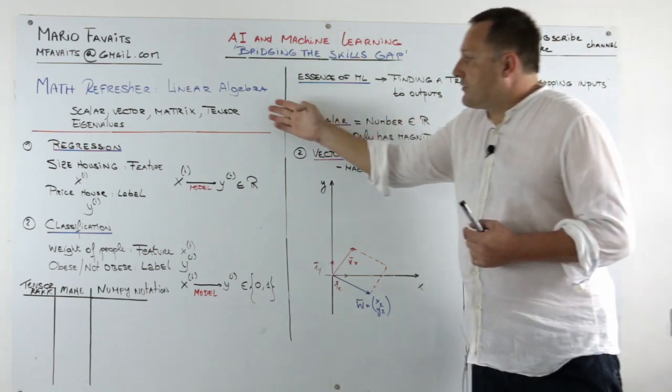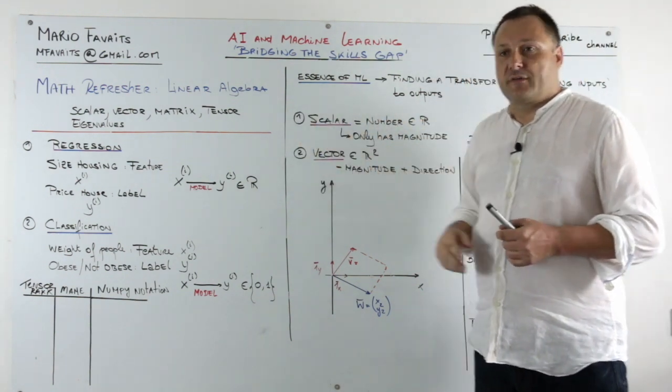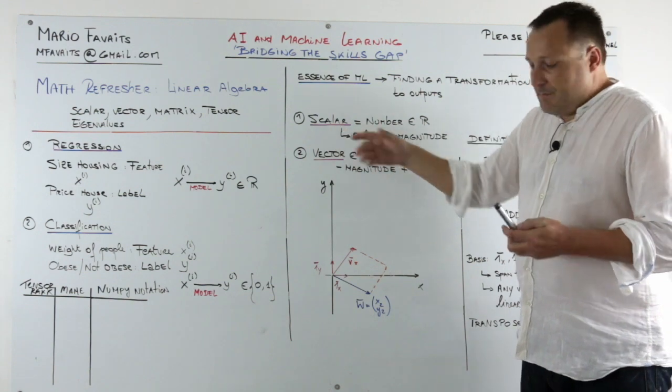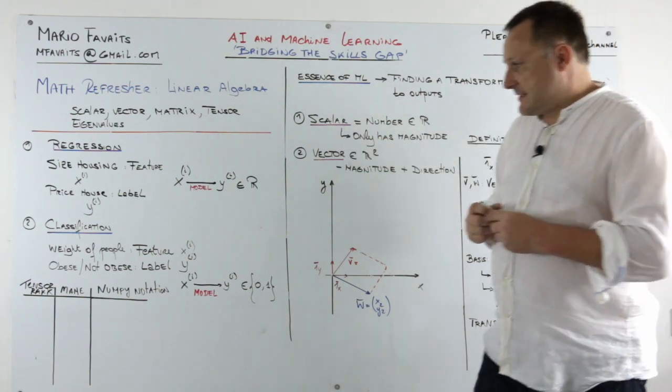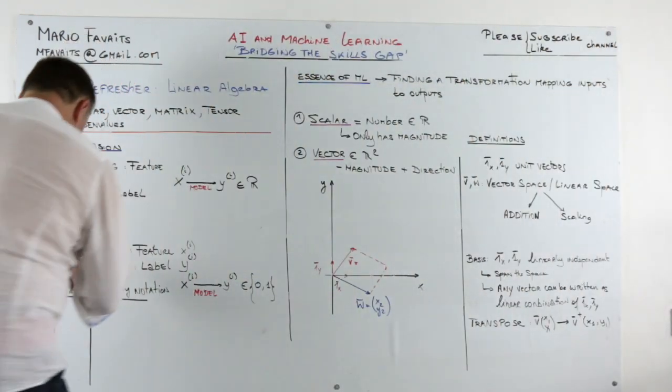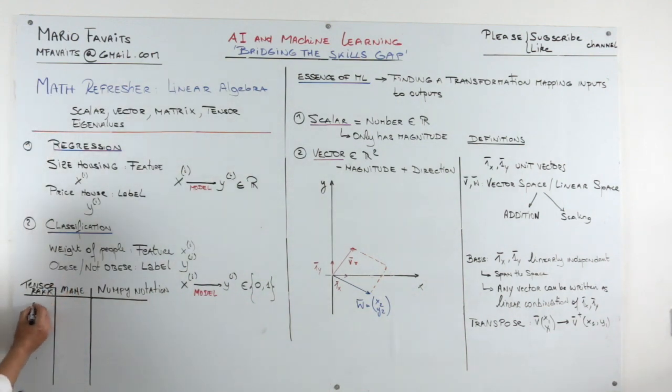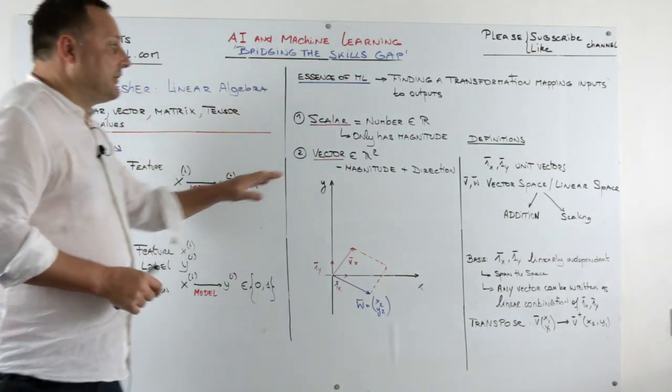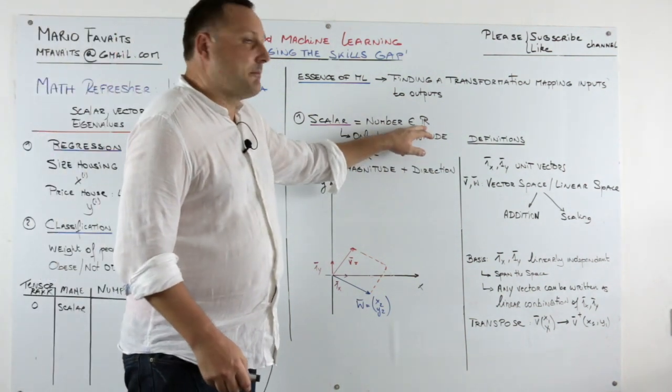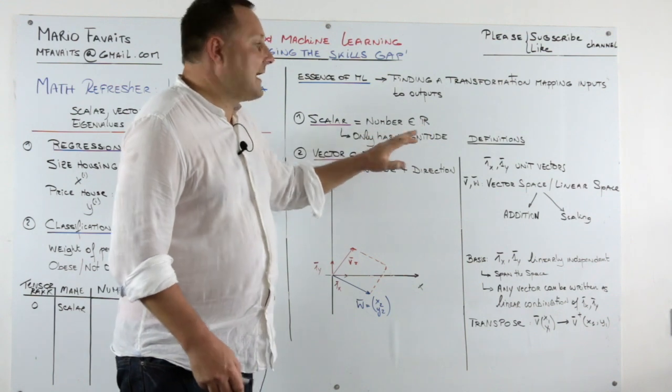So let's now go through these blocks of numbers. The most simple one is a scalar. A scalar we call a tensor of rank zero. And a scalar is nothing more but a number. Any real number. It only has a magnitude.